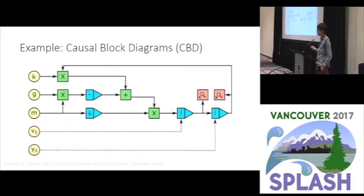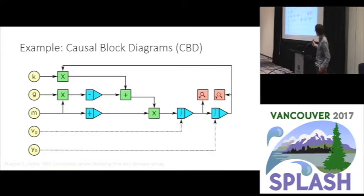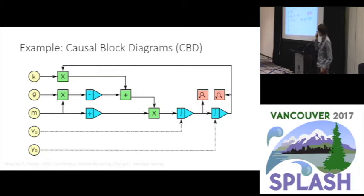To do this we will use an example of a causal block diagrams model. A causal block diagrams model is basically a set of blocks which have an operation — like multiplication, addition, negation, and so on — and these are some constants. This language is used for mathematical operations, and this model specifically models a mass on a spring on which gravity acts, including the spring constant and the mass. Out of this model we get the velocity of the mass as it moves and the current y-position of the mass. As you can see, this is quite a good visualization to express such mathematical models.